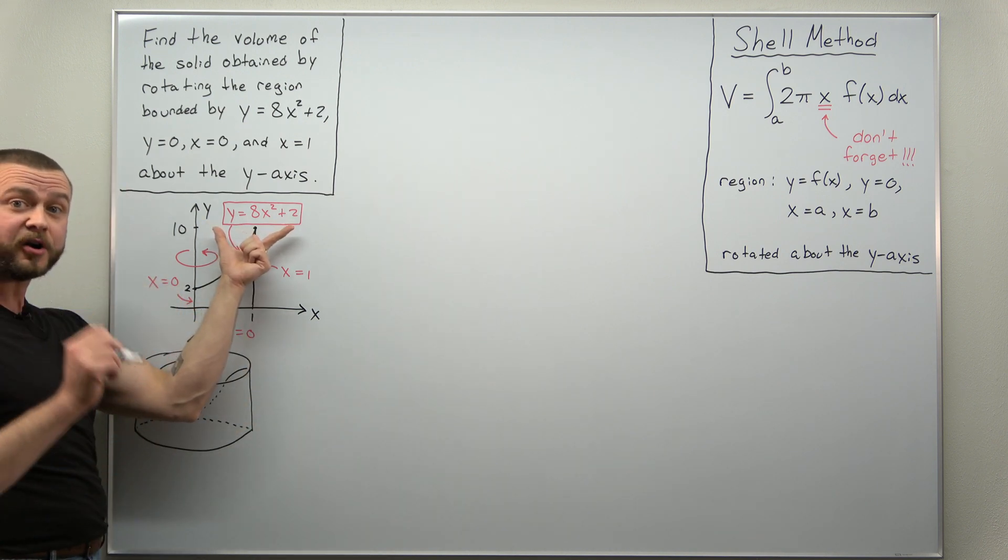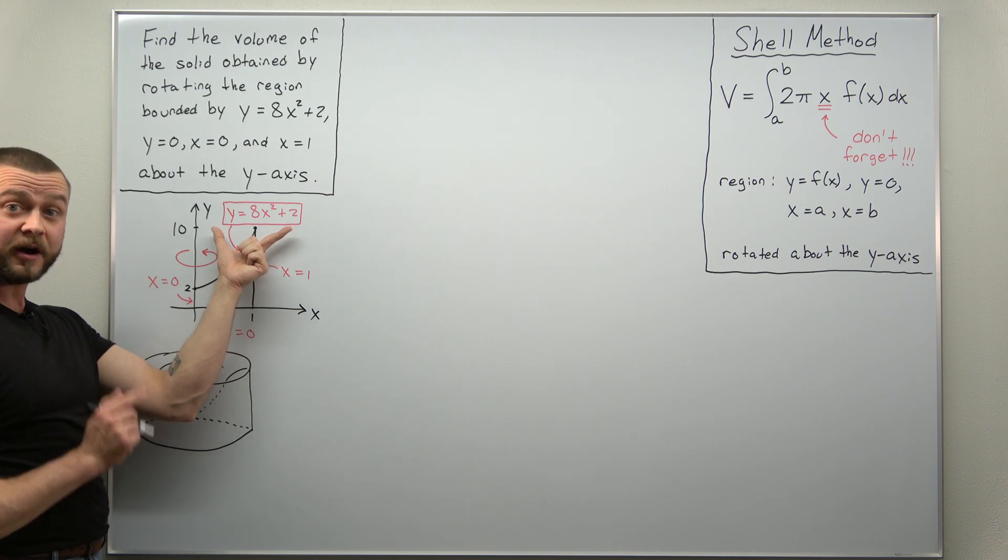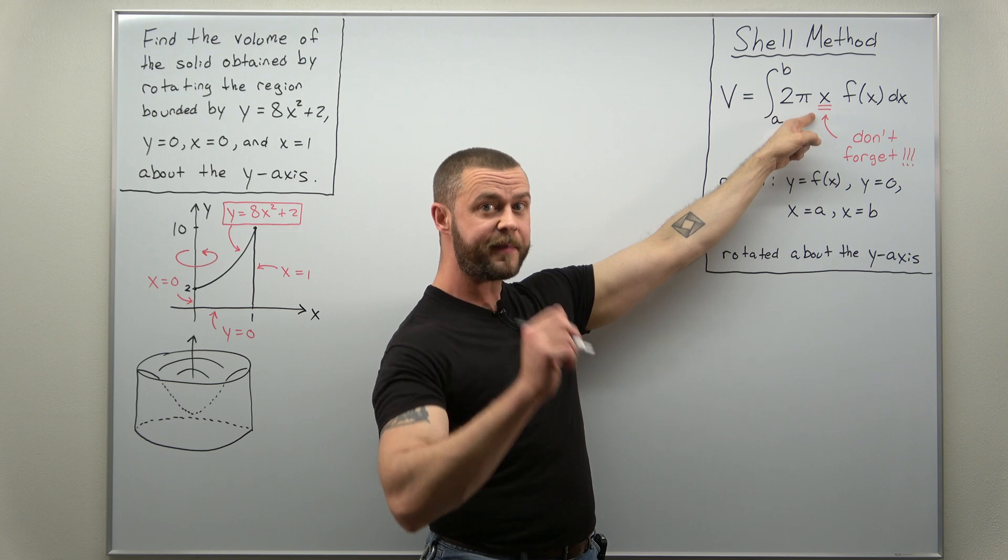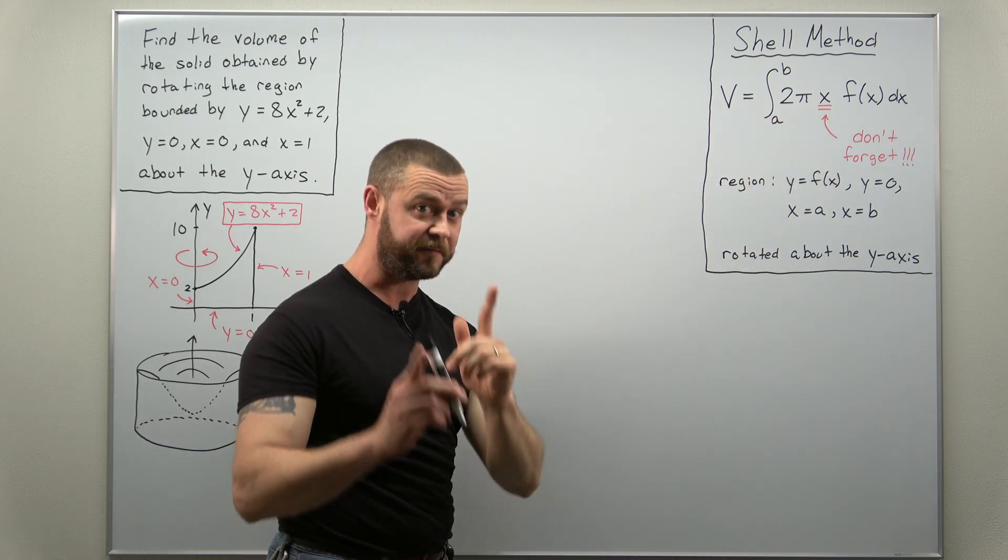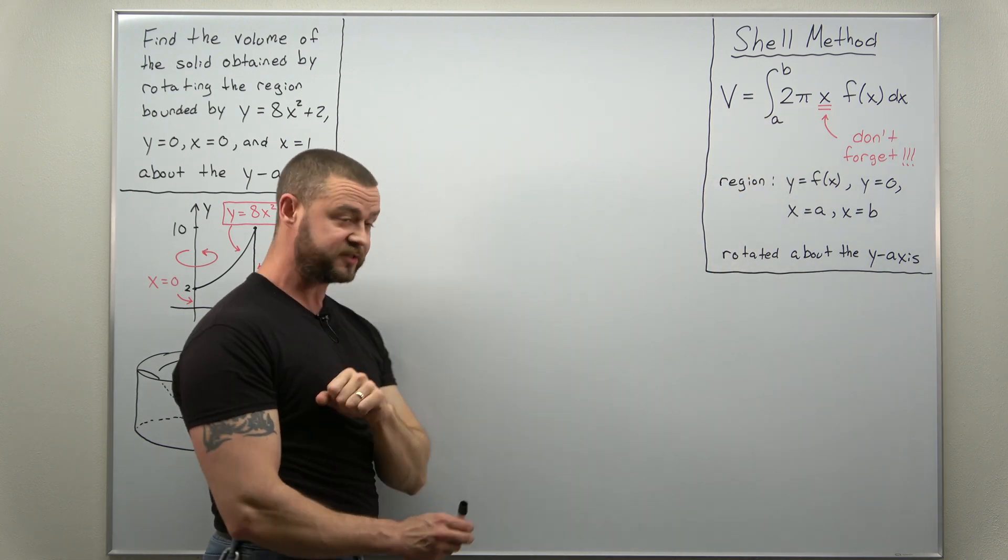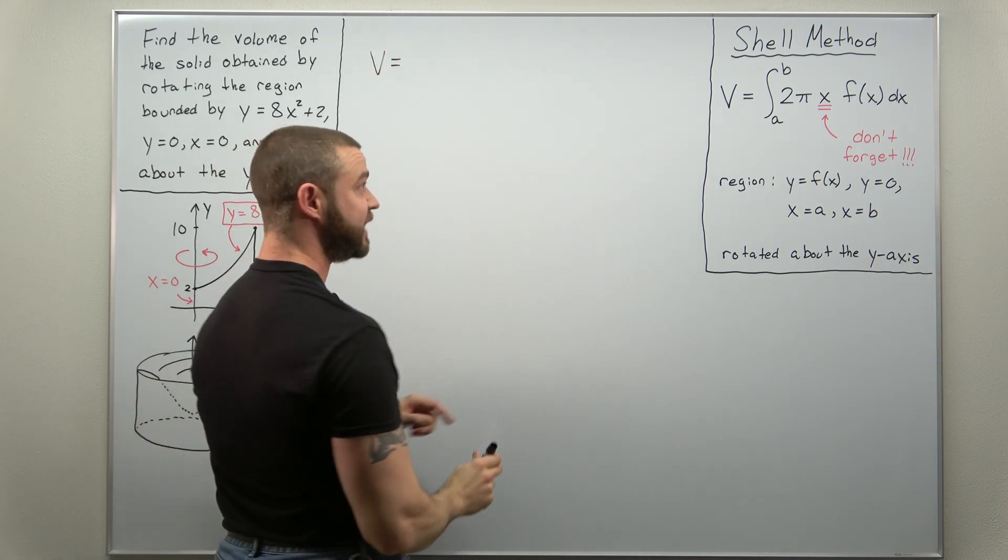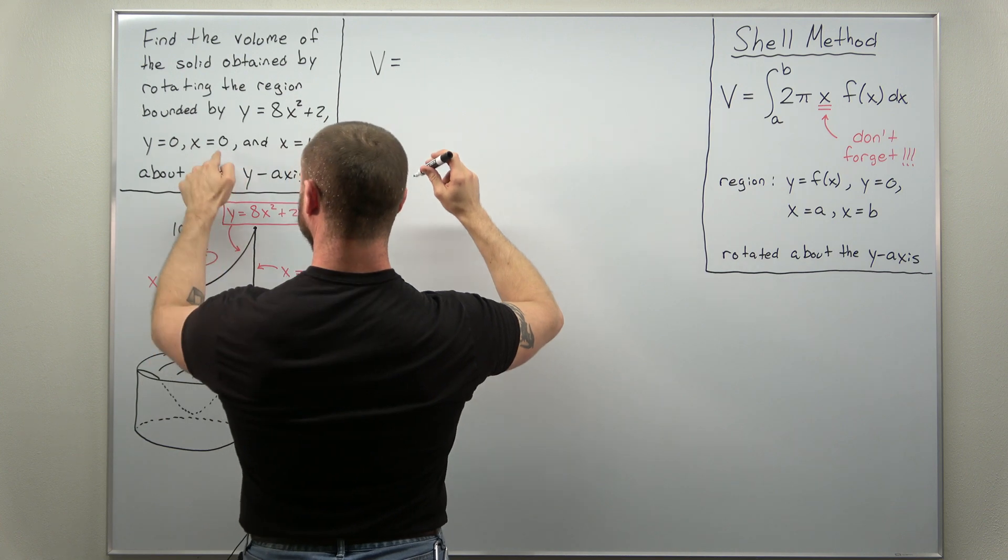Alright so let's go ahead and take our function of x here. This would be our f of x and we're just going to plug it in and we're not going to forget about that factor of x. So let's set up our volume integral by using cylindrical shells. We have this as an integral from 0 to 1.